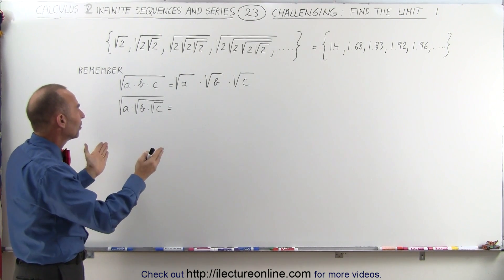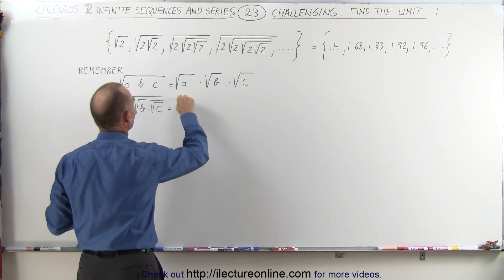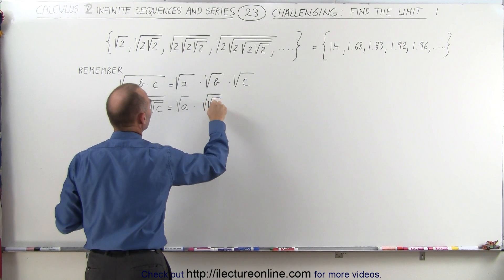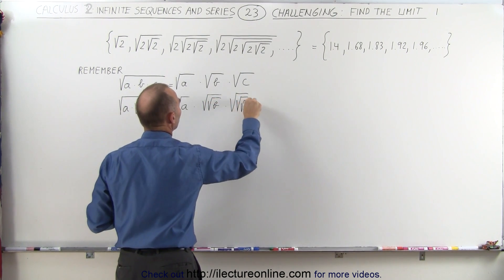you can then separate the products, and you can then say that this is equal to the square root of a times the square root of the square root of b times the square root of the square root of the square root of c.